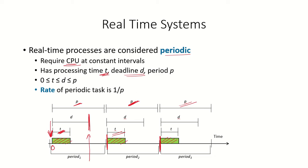The CPU time t will be less than the deadline d, and d will be less than the period p. So the relationship is: 0 < t < d < p. We refer to the rate of a periodic task as 1/p — whatever is the period, the inverse of that is referred to as the rate of the real-time process.